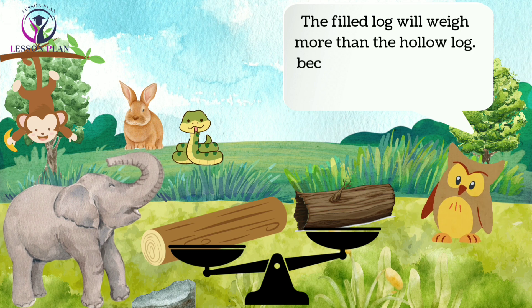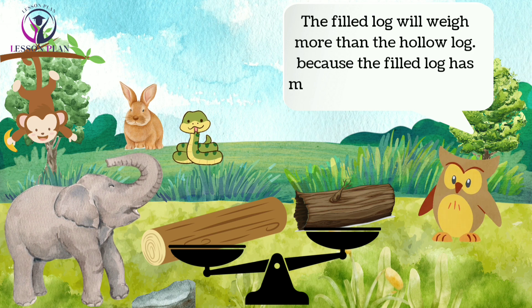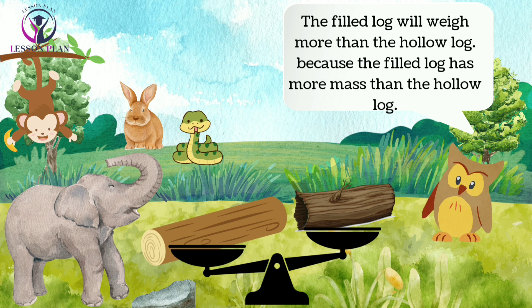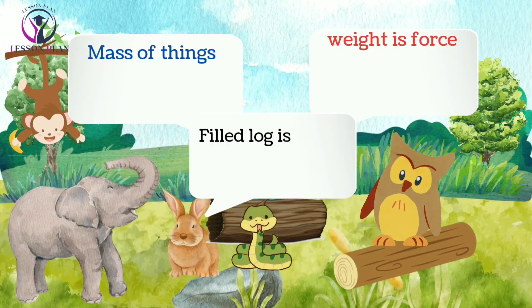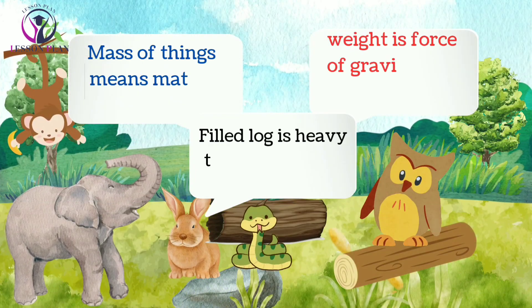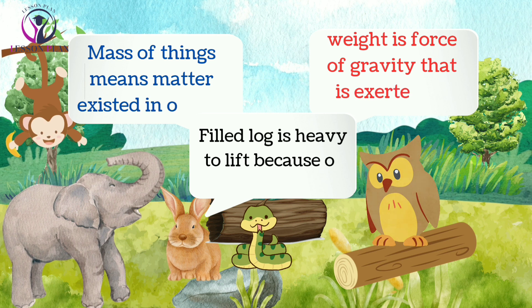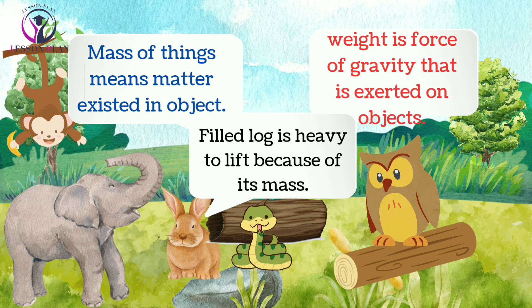Mass refers to the amount of matter in an object — the more matter an object has, the more massive it is. Weight, on the other hand, refers to the force exerted on an object by gravity. The heavier an object is, the more it weighs.